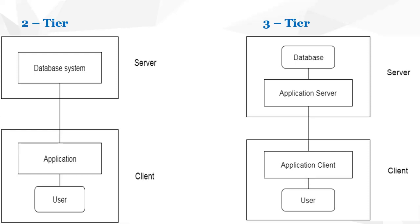Another is the three-tier architecture, where the client is the same as in the two-tier architecture, but the server is divided into two machines. One machine will only have the database, and the other machine will only have the application or database management system. So if the database is on one machine, the DBMS software is on another machine, and the client is separate — you have three machines — then this is called three-tier architecture.